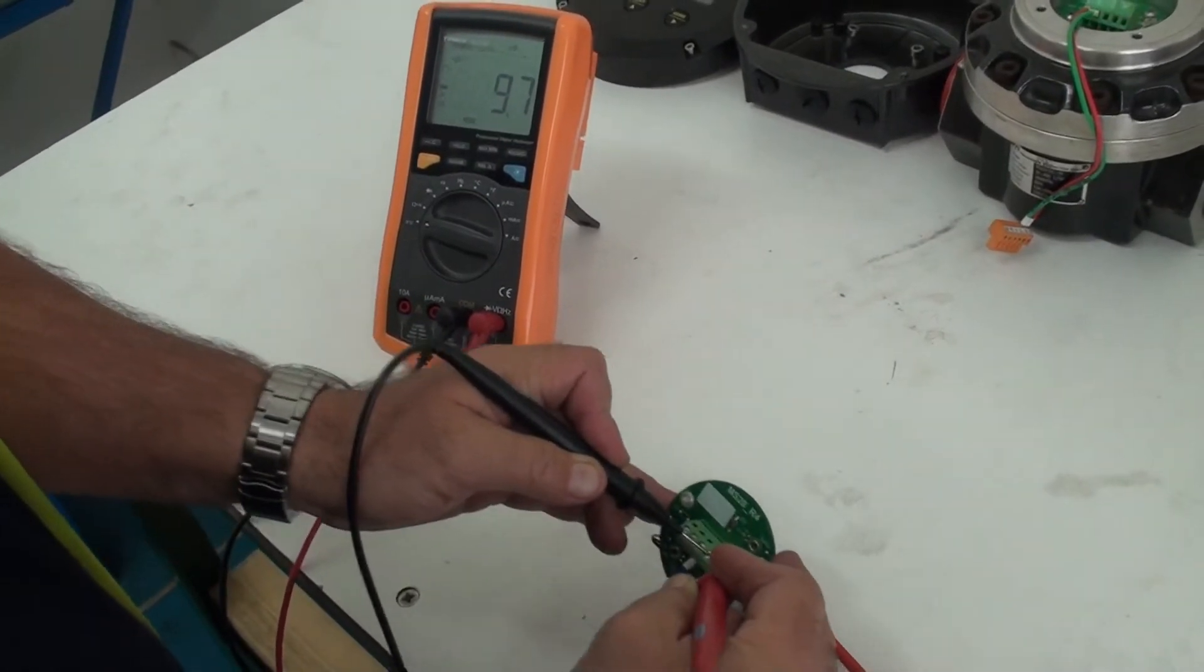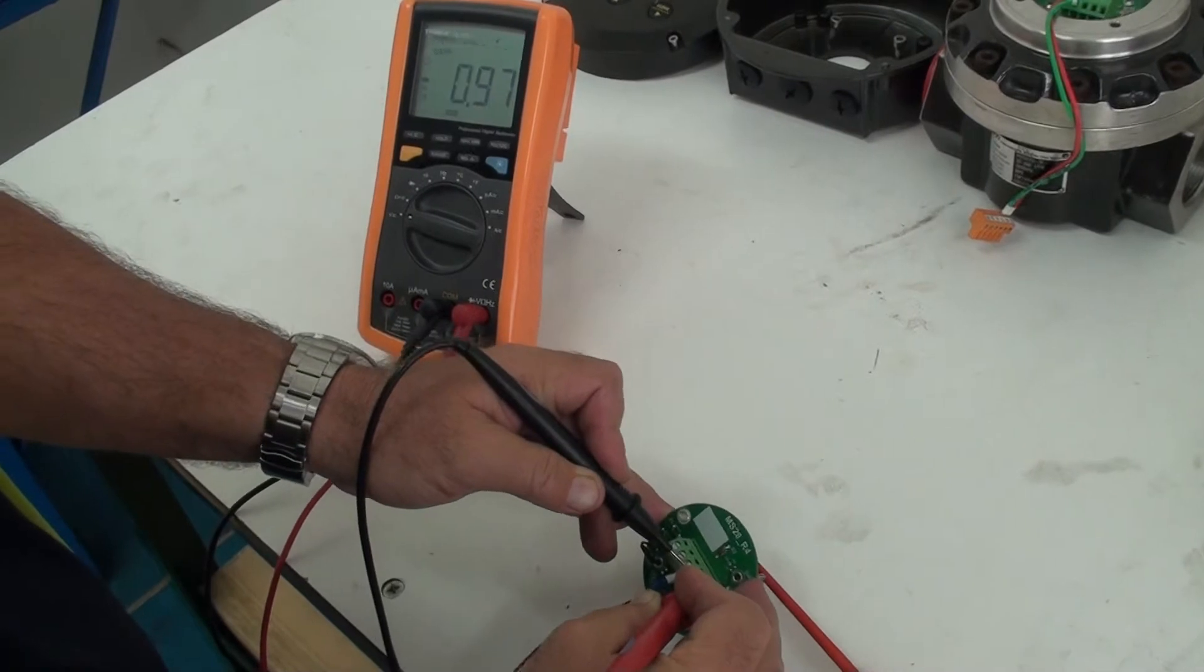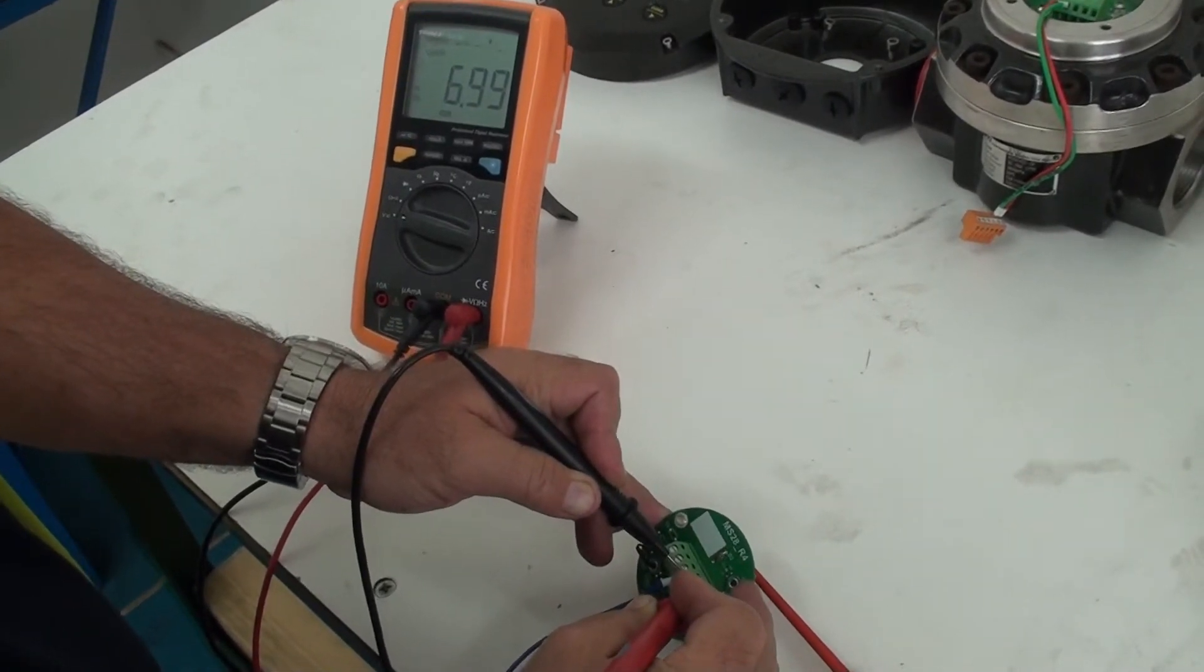Now as soon as I put that near a magnet which I have on the table here you can see I go to my seven volts.